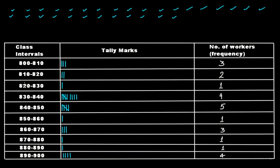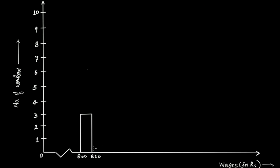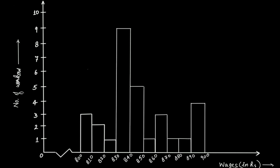For 810 to 820, the frequency is 2, so the bar height goes up to the level of 2. The bars should be the same width; 820 is the next boundary. We will pause the video here to complete drawing all the bars and then continue the discussion.